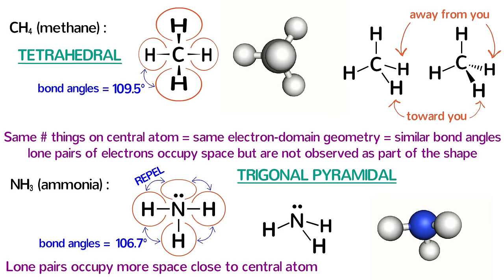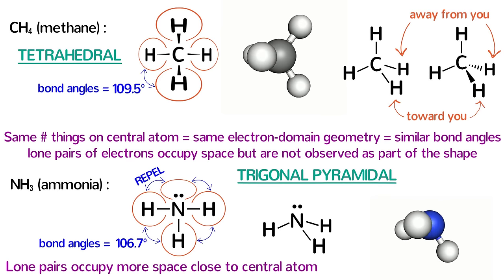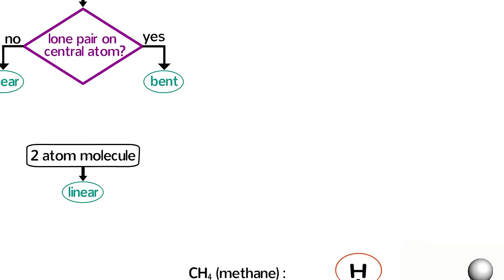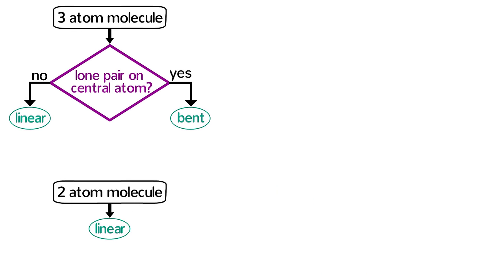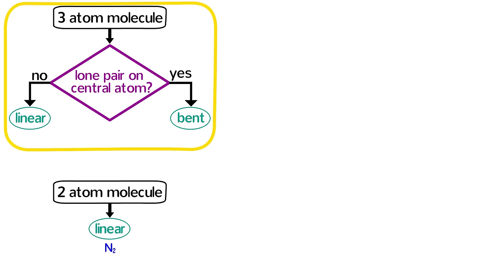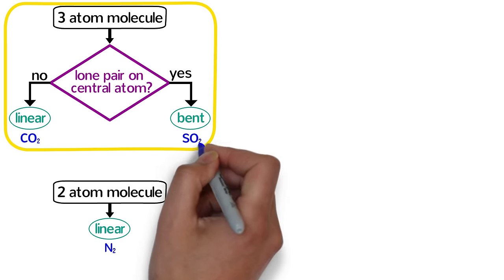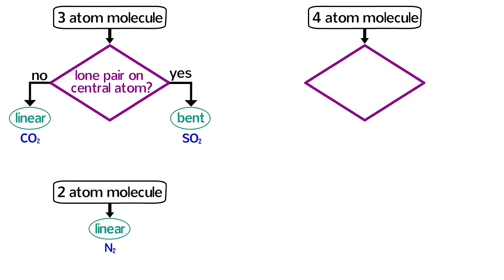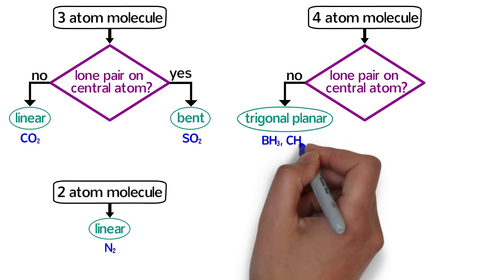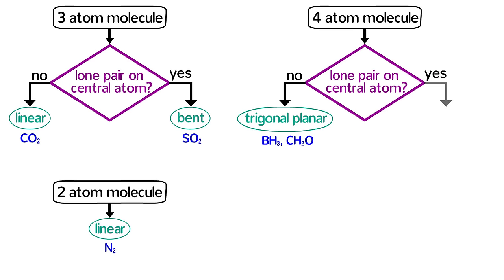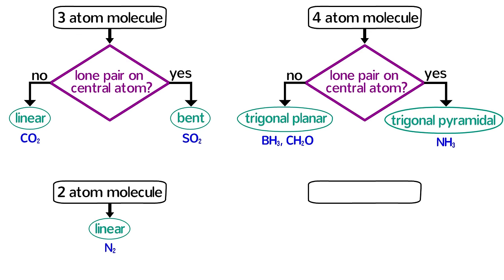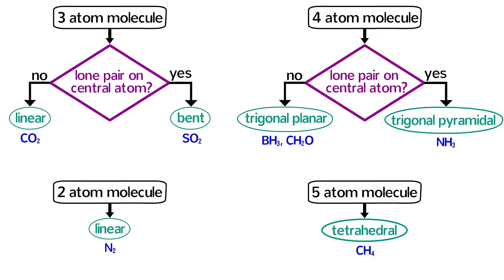We have already looked at the five basic shapes of molecules along with an example for each one and the guiding principle of electron-electron repulsion. For three-atom molecules, if there are no lone pairs on the central atom, the shape is linear like CO2. If there are lone pairs, the shape is bent like SO2. For four-atom molecules, if there is no lone pair on the central atom the molecule is trigonal planar like BH3 and formaldehyde. If there is a lone pair, the molecule is trigonal pyramidal like ammonia. Five-atom molecules are typically tetrahedral like methane, although there are some exceptions for non-octet molecules, which I will discuss in a different video.